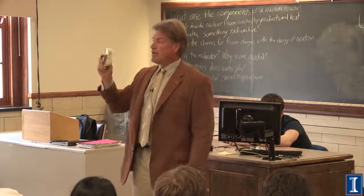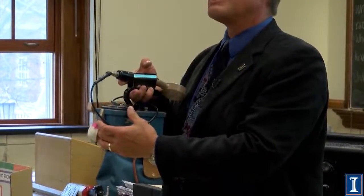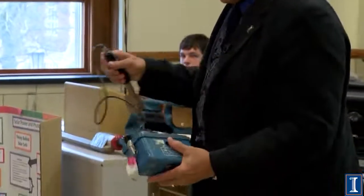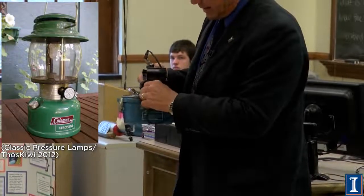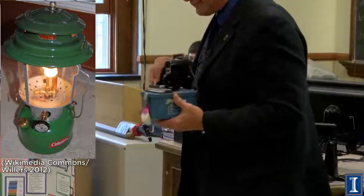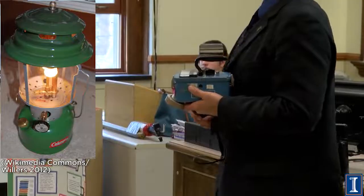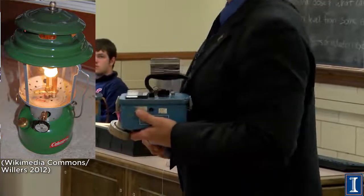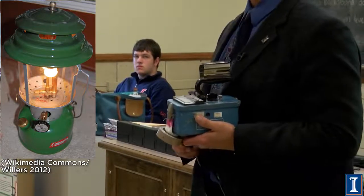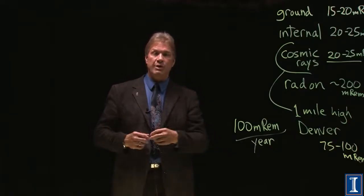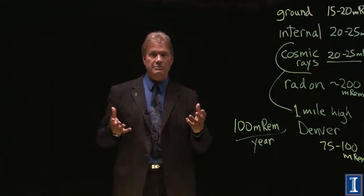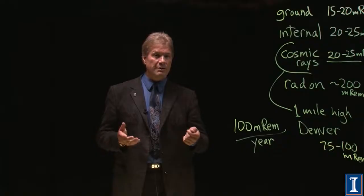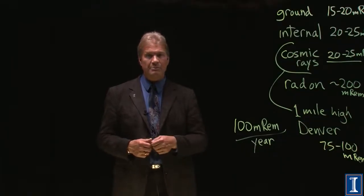Here's another example: a lantern mantle. You go camping with a gas lantern, and from propane or kerosene you can get light. If the mantle is made out of a very large element with many electrons like thorium, you get a nice, white, crisp, bright light. Most thorium is radioactive, and because of that the lantern mantle can give you five millirem per hour — certainly higher than your background of one millirem a day. You probably don't want to eat it.